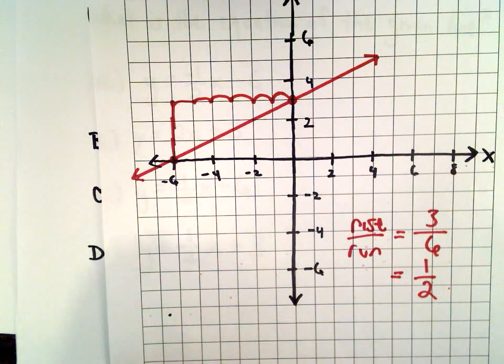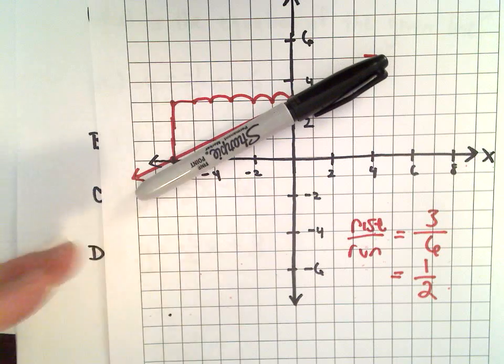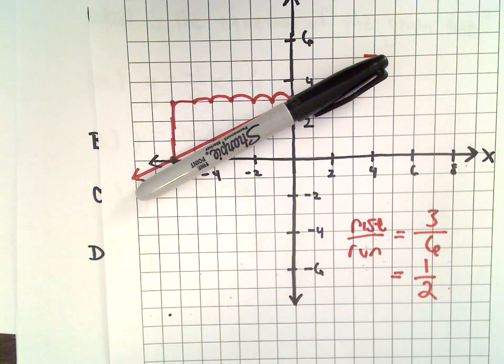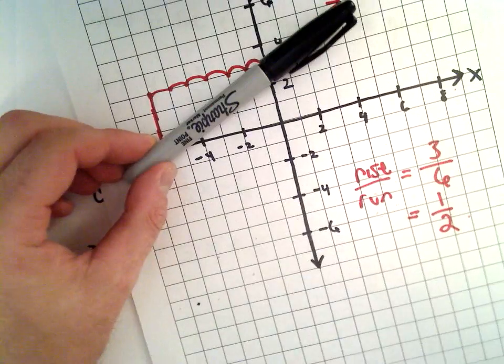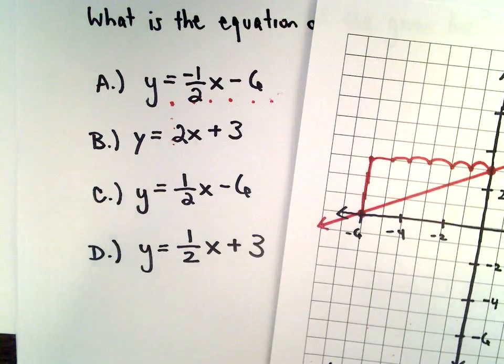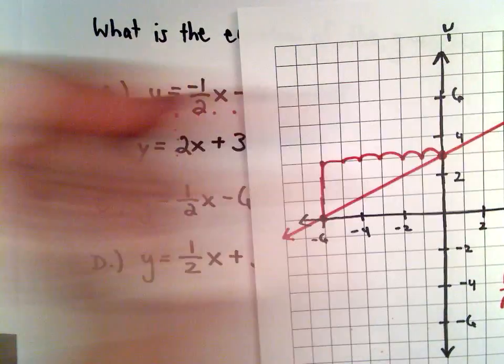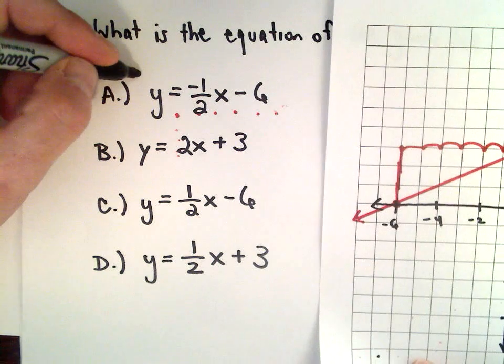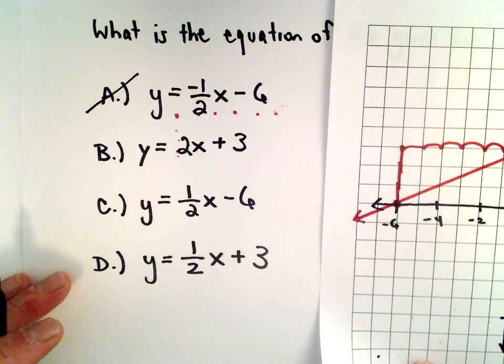One other remark, one other thing to remember. If your line is going up as you move left to right, the slope is always going to be positive. So I know just based on that fact, since it's moving up as I go left to right, I know that answer choice A simply can't be correct.